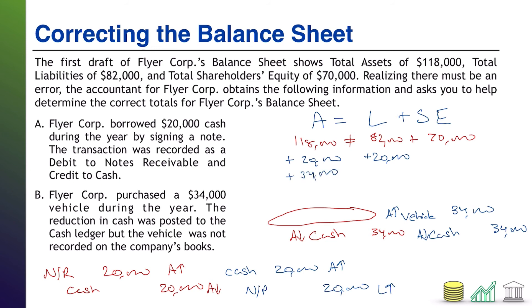Add $34,000 to assets. Now, tallying everything up: assets start at $118,000, plus $20,000 gives $138,000, plus $34,000 gives $172,000 total assets. Liabilities start at $82,000, plus $20,000 gives $102,000. Shareholders' equity remains at $70,000. Liabilities plus equity equals $172,000. We have fixed our balance sheet and now know the true balances in assets, liabilities, and shareholders' equity as a result of this additional information.